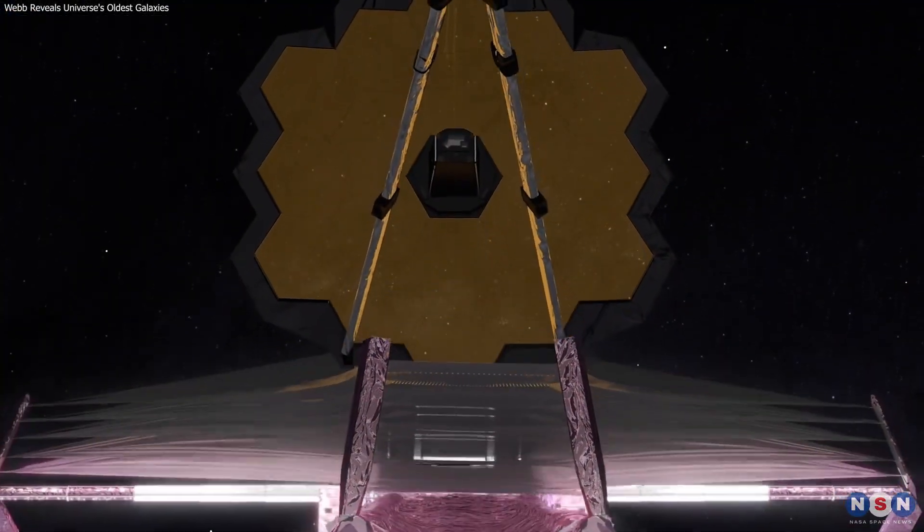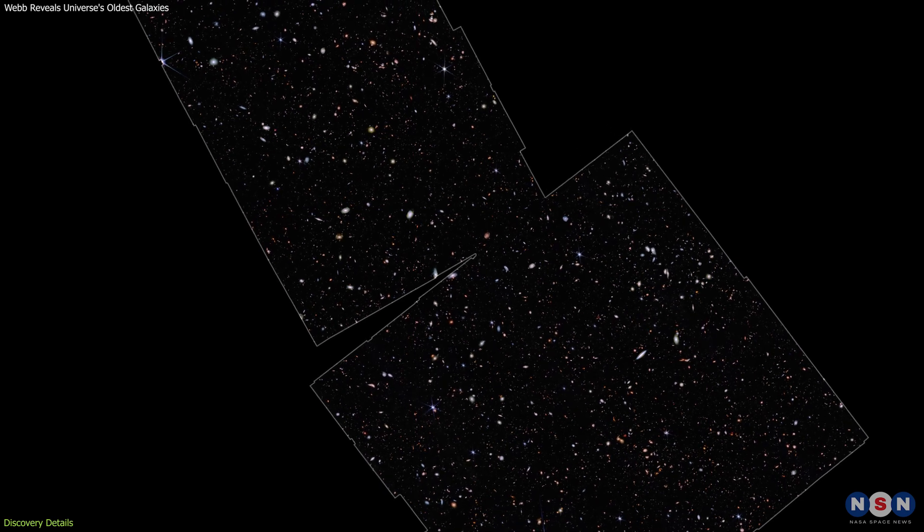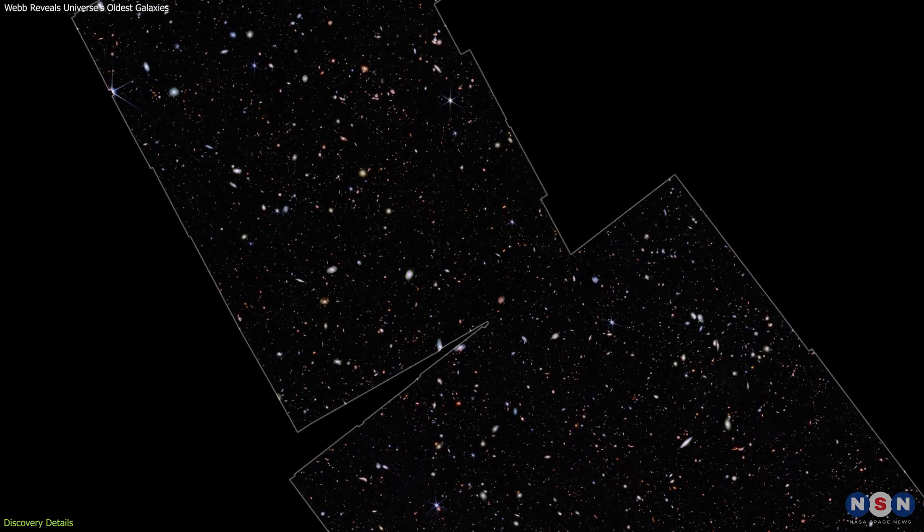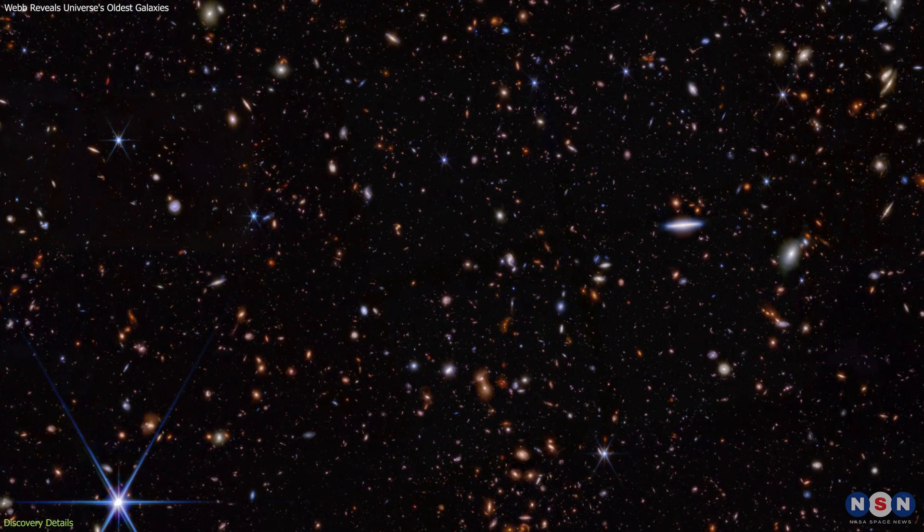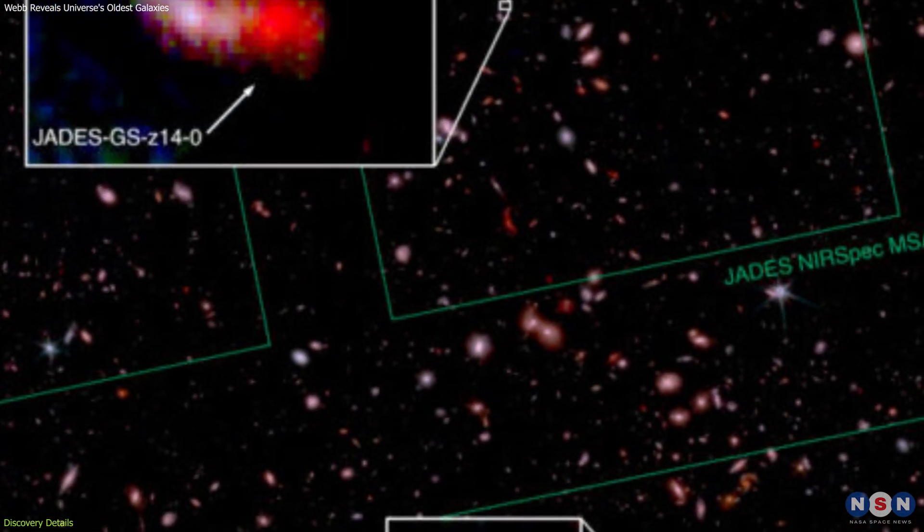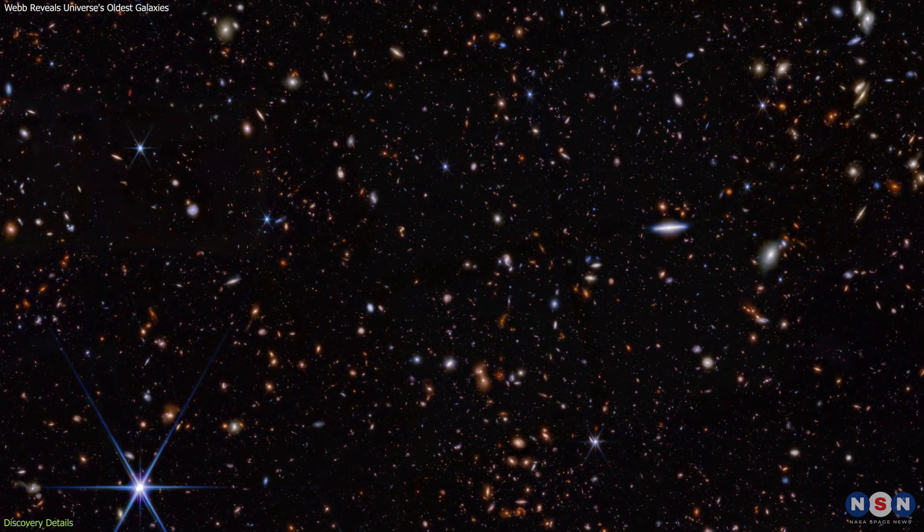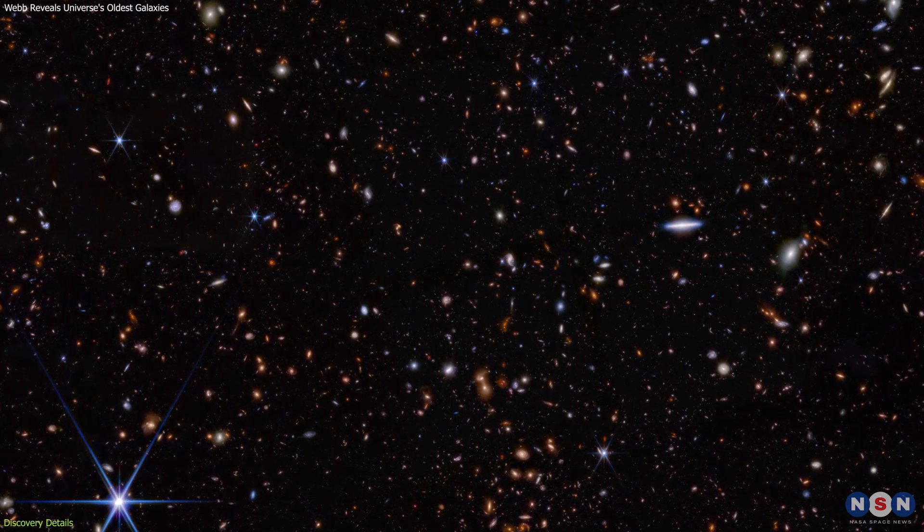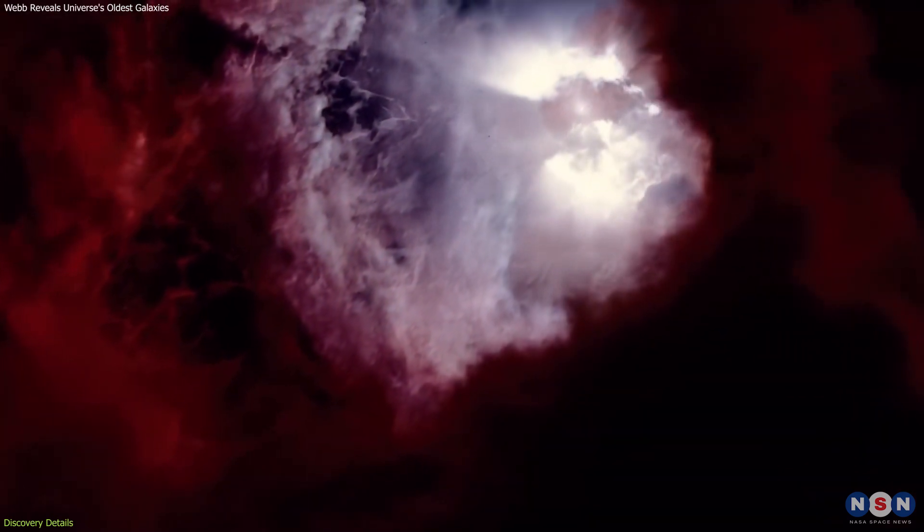The James Webb Space Telescope, through the Advanced Deep Extragalactic Survey, JADES, has made groundbreaking observations, identifying the two most distant galaxies known to date. This survey is a collaborative effort involving top scientists from around the world, aiming to explore the early universe with unprecedented clarity.